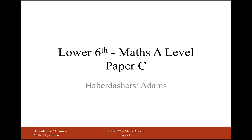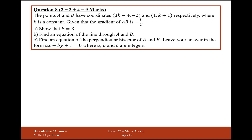Hello and welcome to Lower 6 Maths A Level practice paper C. Here we're working on question A, a coordinates question. The points A and B have coordinates (3k-4, -2) and (1, k+1) respectively, where k is a constant. Given that the gradient of AB is minus 3 over 2, show that k equals minus 3.